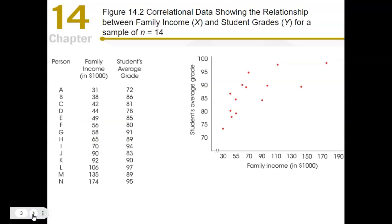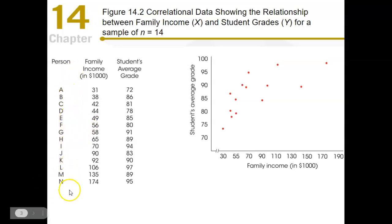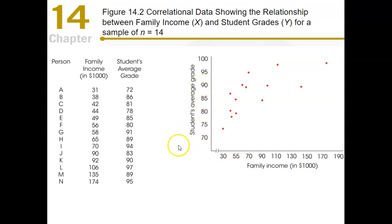Here we have some data: family income and student average grade for individual students — persons A, B, C all the way down to N. Each dot represents one person, with a value along the x-axis for family income and one along the y-axis for student average grade. You can see that there appears to be a pattern.